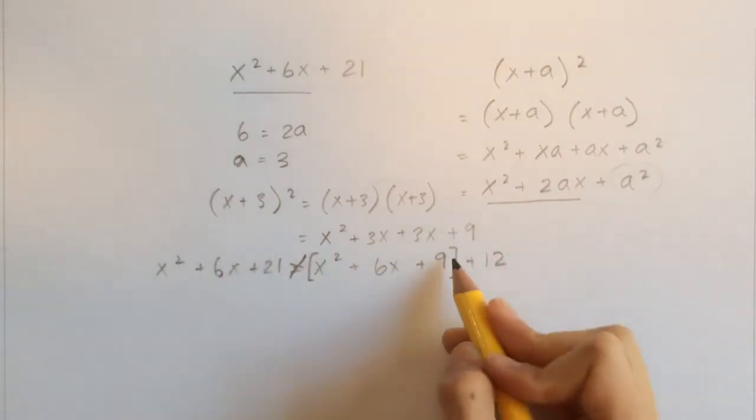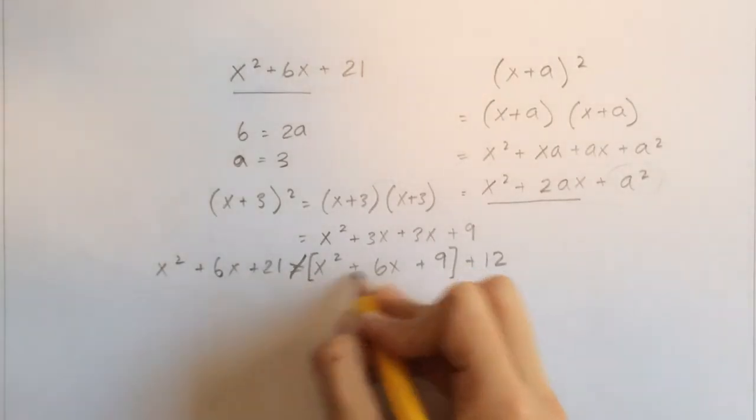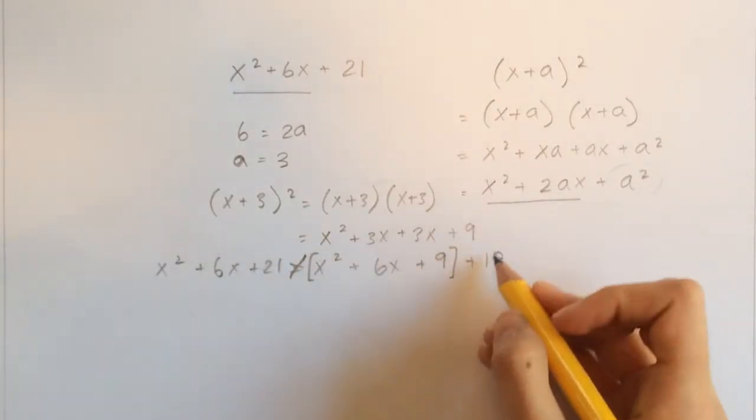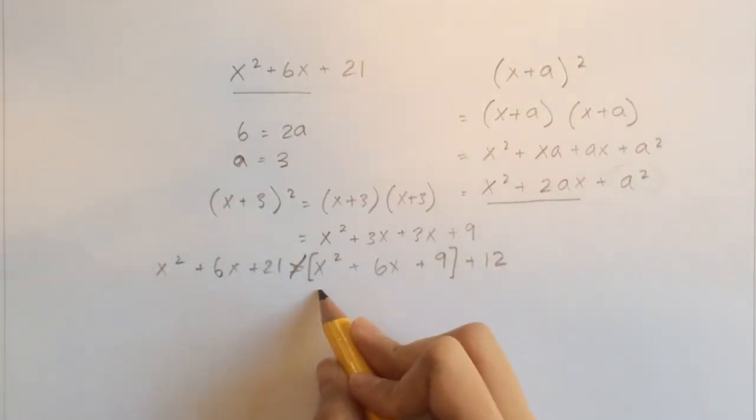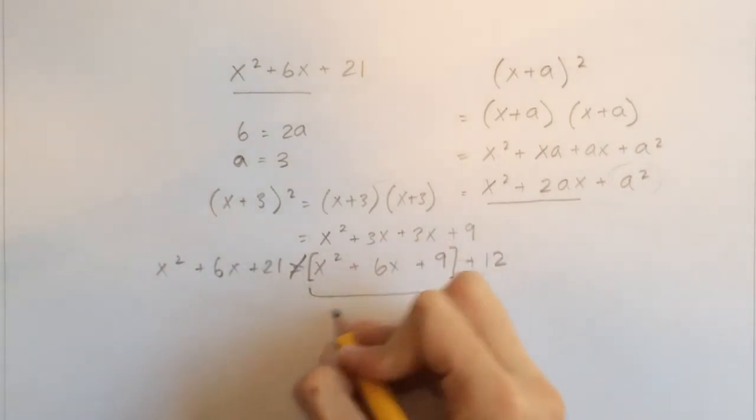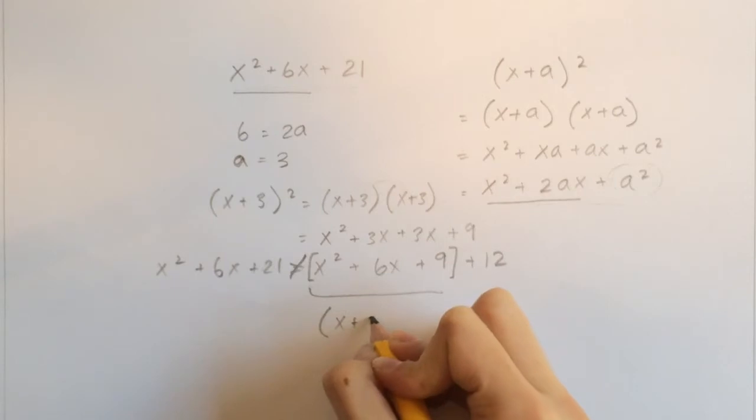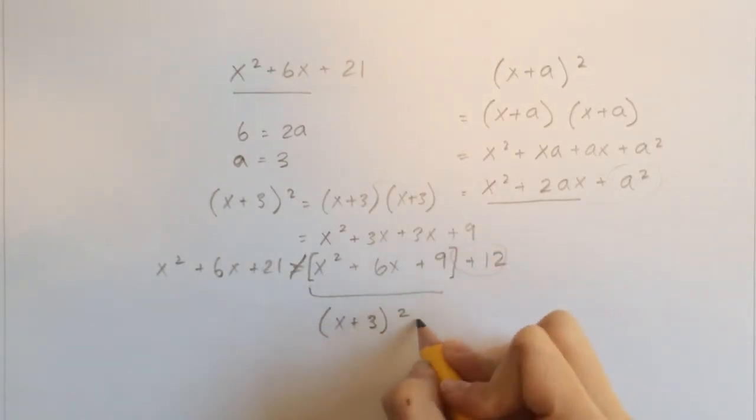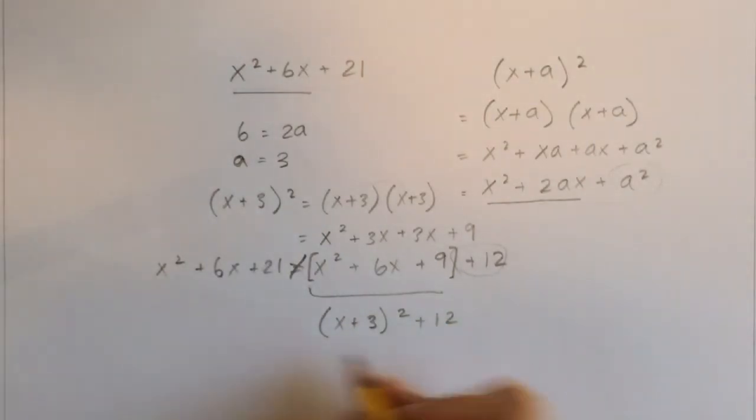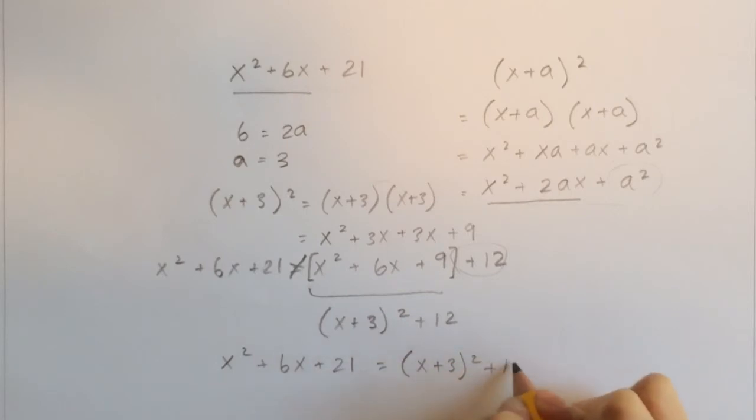Now we'll have plus 21 and plus 21. So now what we're going to have, we know that this right here is equal to (x+3)². And we still have this plus 12. And now, there you go, we have found that x² + 6x + 21 is equal to (x+3)² + 12.